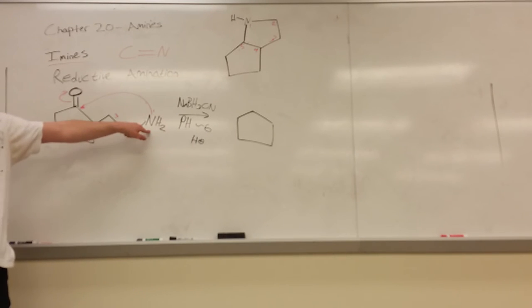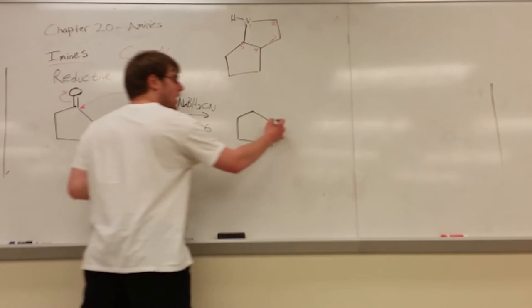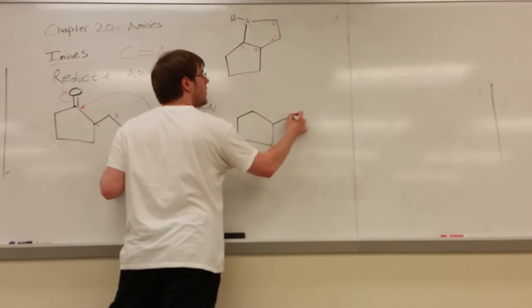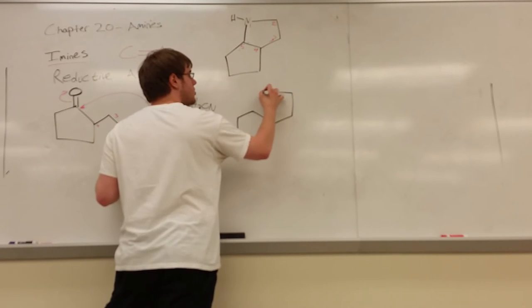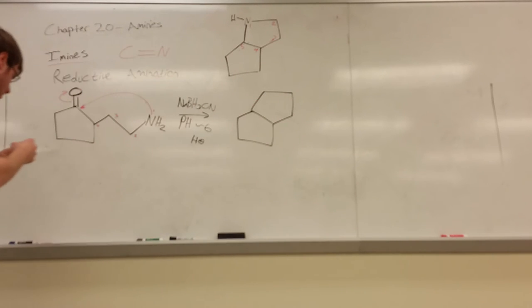And again, if you're not sure, if you see you're forming a ring by having a molecule attack itself, number it in this way. Number the carbon or the nitrogen or whatever is doing the attack one, and count your carbons along the chain until you reach the point that's being attacked. And that will tell you how large your ring is going to be. Since I'm making a five-membered ring, I can just draw a five-membered ring.